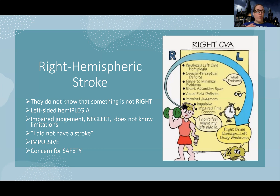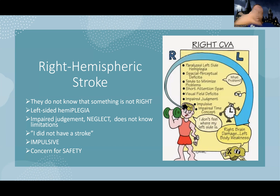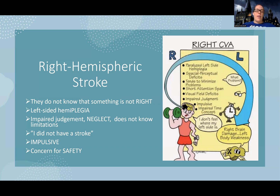They're completely, blissfully unaware that they've had a stroke and will say, 'Hey, I didn't have a stroke.' Right brain or right hemisphere stroke is going to produce left-sided weakness or left-sided hemiplegia — left body weakness. So to summarize: right-sided brain, left body weakness. Left-sided brain, right side of the body is affected. You always want to think the opposite side of the body is affected depending on which side of the brain is injured.